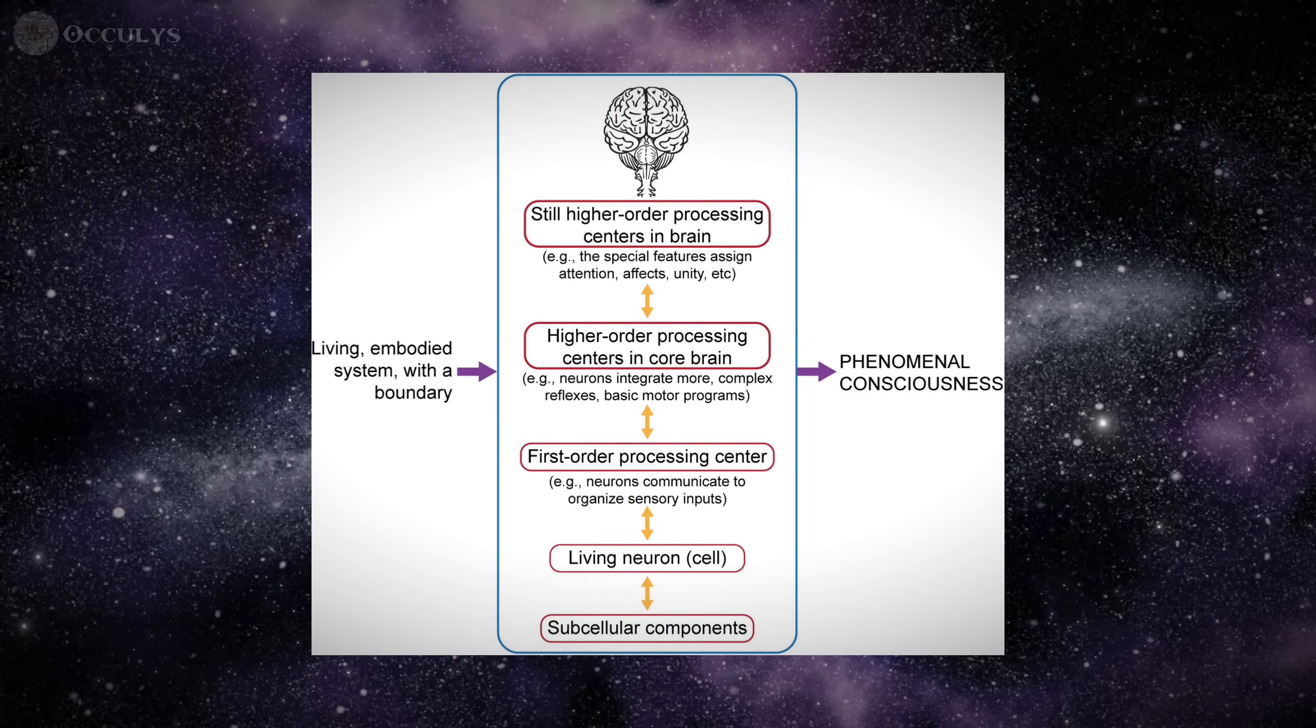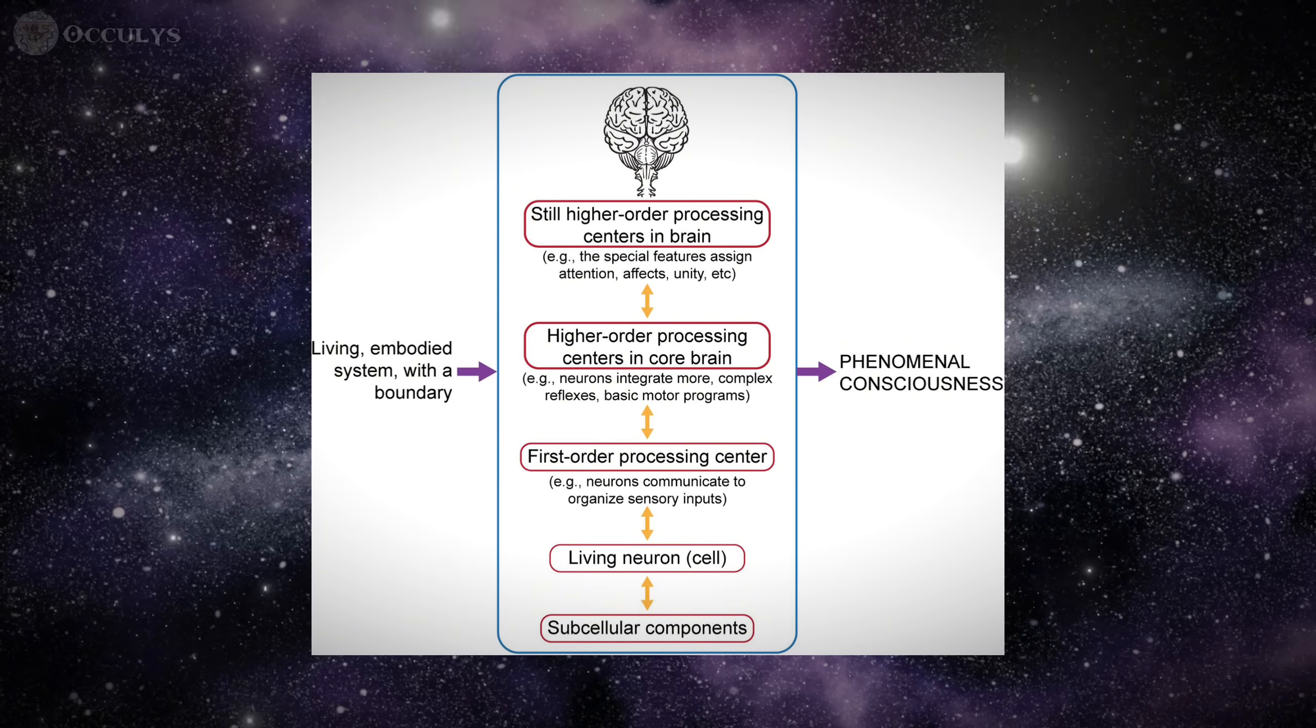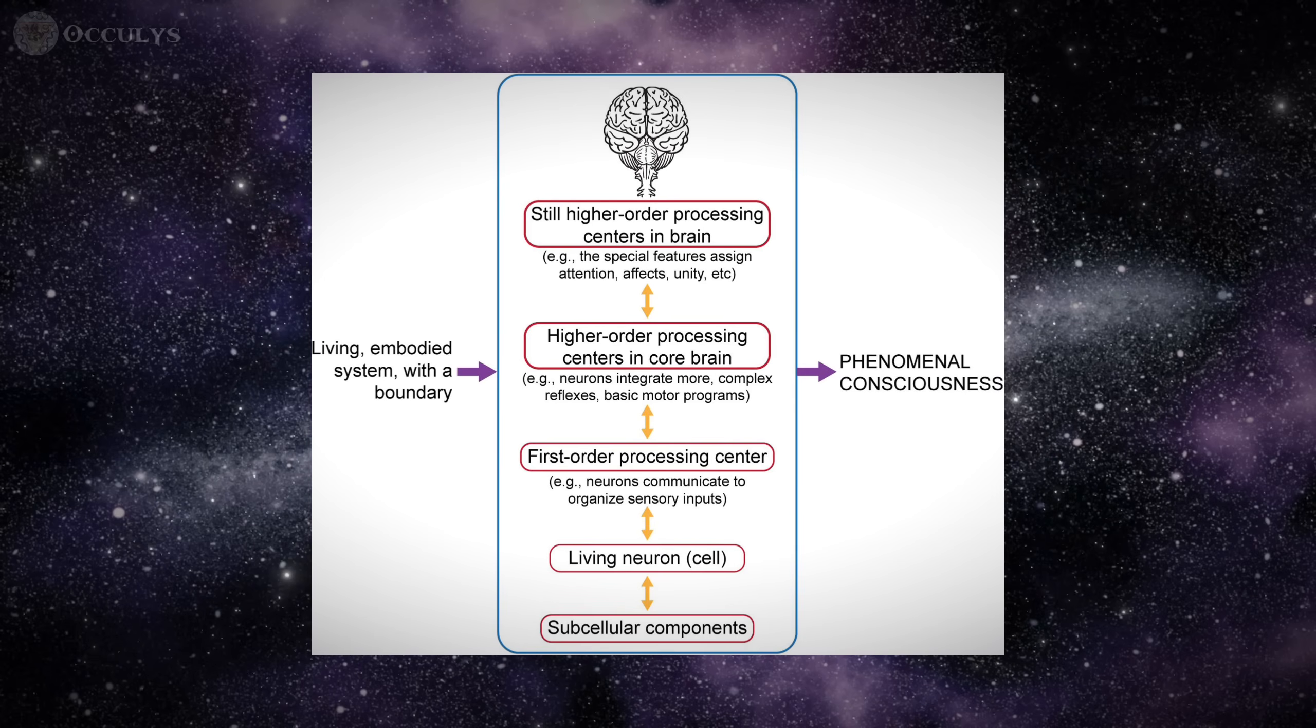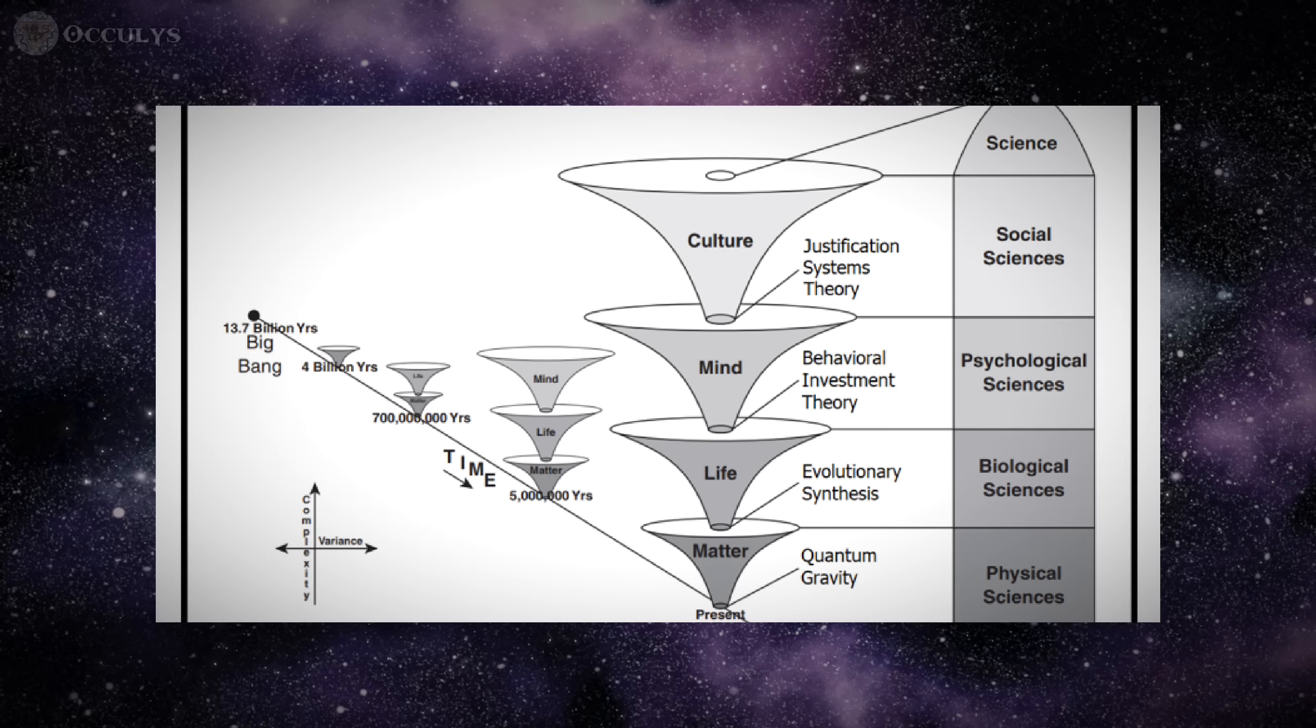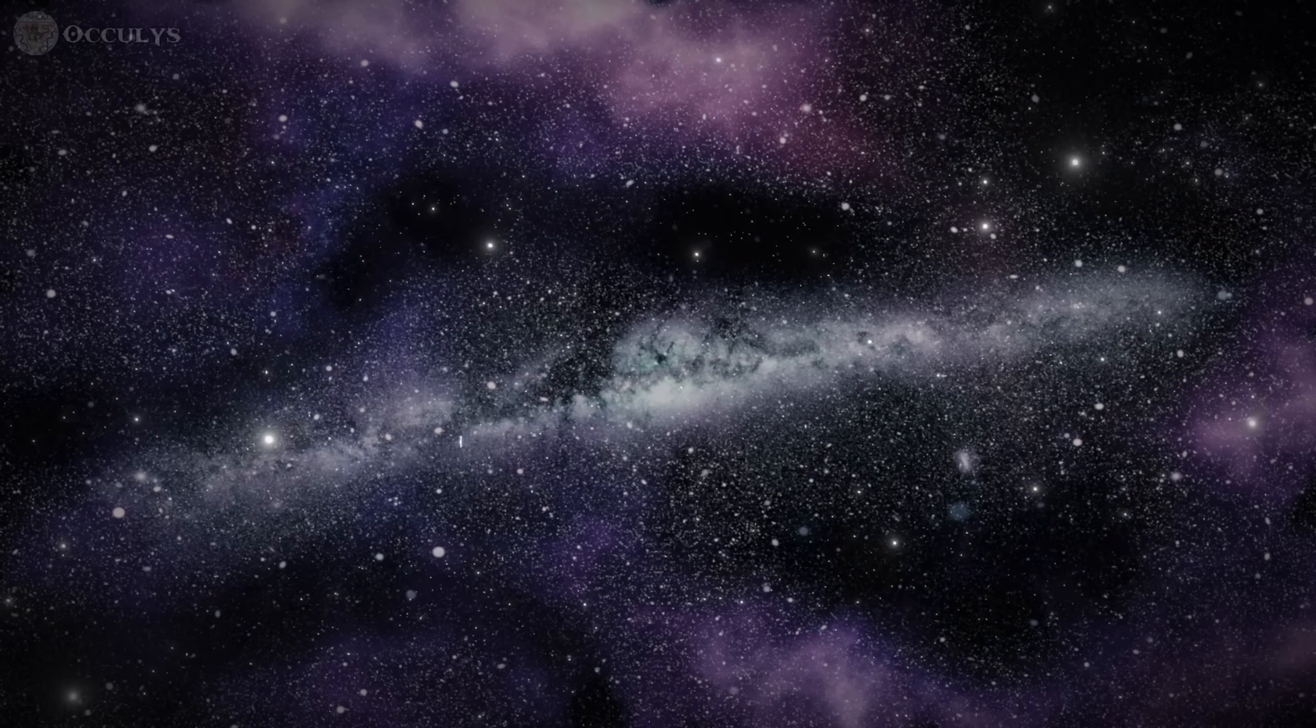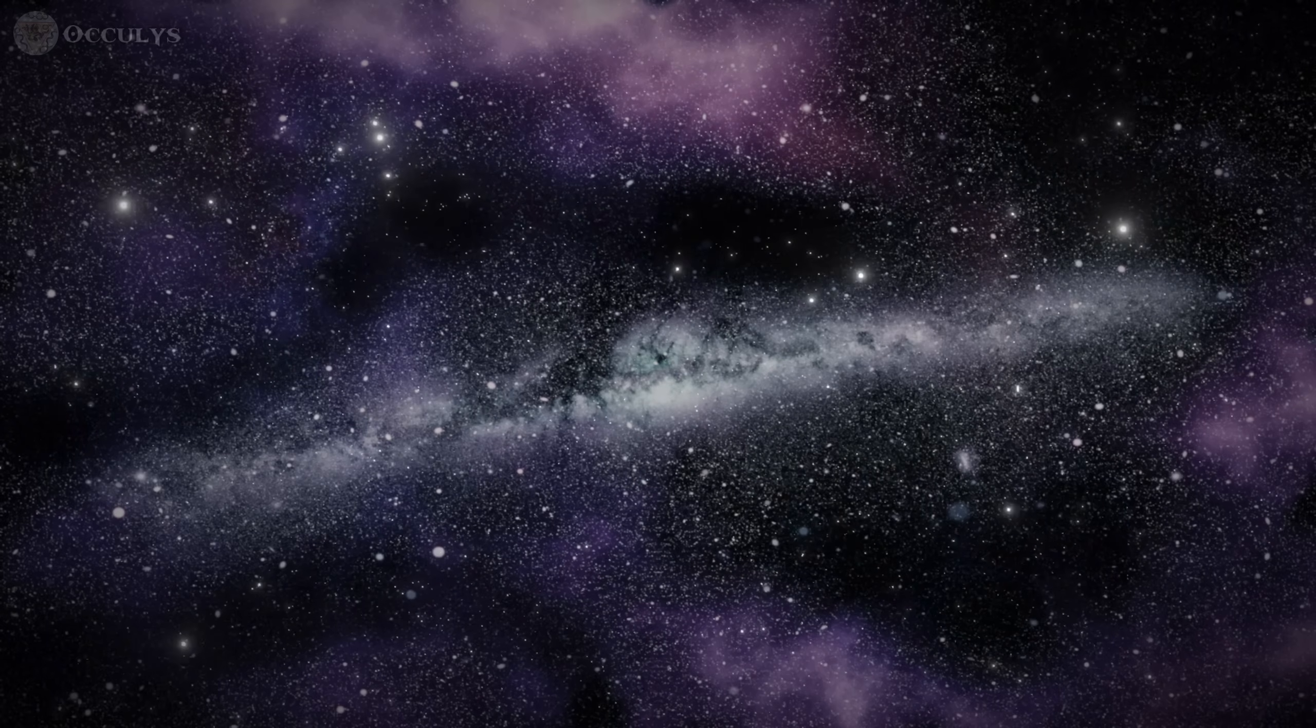Panpsychism must also contend with the mainstream scientific view of strong emergence. This is the idea that consciousness is a genuinely new property that appears once matter reaches a sufficient level of complexity as it does in a brain. From this standpoint, consciousness does not exist in the constituent parts at all. It arises from their arrangement. While this may seem more intuitive to many scientists, panpsychism challenges it as a less parsimonious explanation.